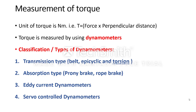The types of dynamometers are: transmission type, belt, epicyclic, and torsion type. Second is absorption type, which has two parts: prony brake and rope brake. Next are steady current and servo control dynamometers. The function of a dynamometer is to measure and absorb the power.